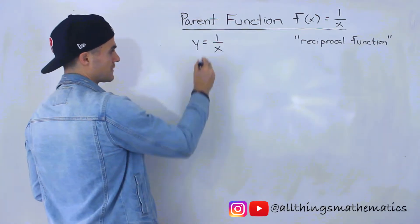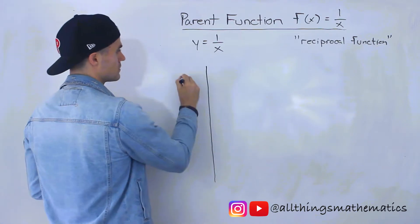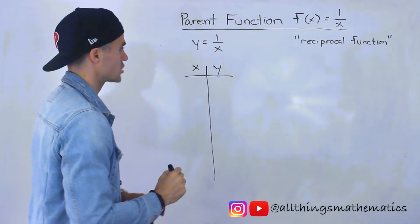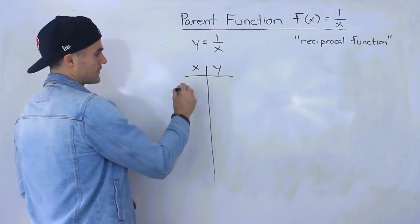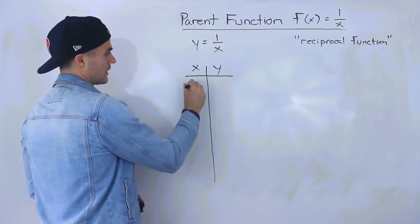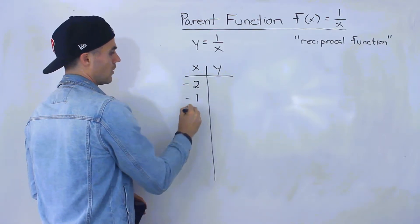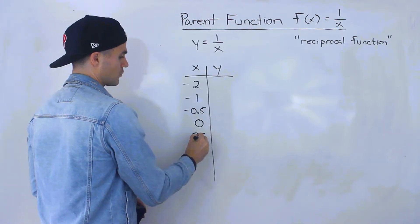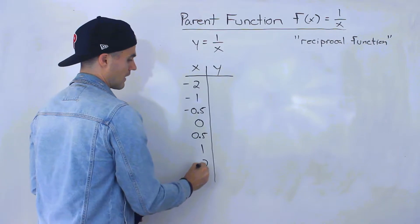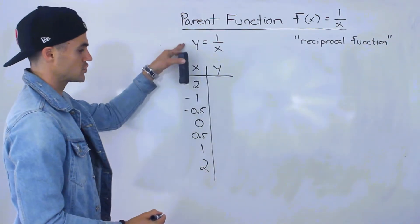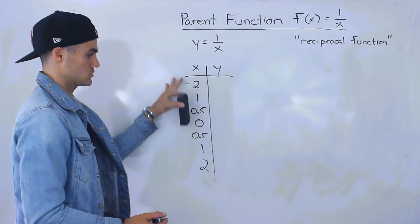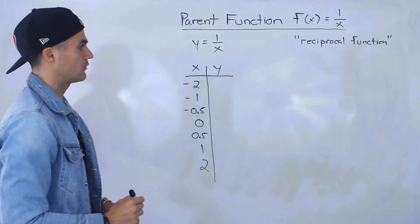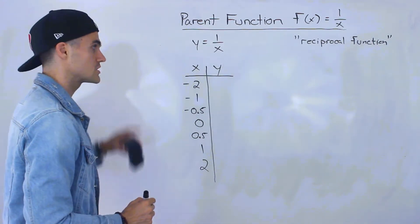Because this function is so unique, I'm actually going to use a bunch of x and y values to try to really figure out what the shape is going to look like. The x values I'm going to use in particular are negative 2, negative 1, negative 0.5, 0, positive 0.5, positive 1, and then positive 2. Your teacher may use different points, but we're going to take these points, plot them, and see how the shape of this function is going to look.